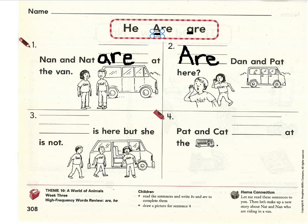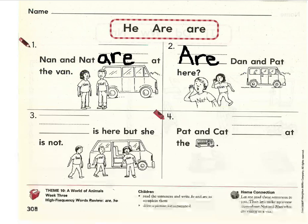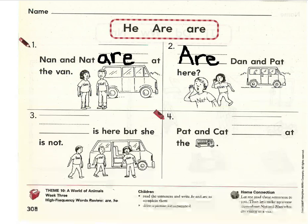Number three. Blank is here, but she is not. I noticed that the word that's missing is the first word in the sentence, so it needs to be capitalized. So we're going to look at the first two words in our word bank. Let's practice with the word he first: He is here, but she is not. Does that make sense? It does. Just to make sure, let's read it with the other word: Are is here, but she is not. No, that doesn't make sense. He was the correct choice. Let's write the word He on the handwriting line. Make sure to capitalize the letter H at the beginning because it's the first word in the sentence.